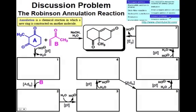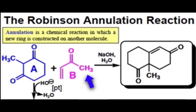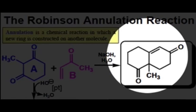I'd like to encourage you to tackle this discussion problem. This is the Robinson annulation reaction. Now that we have gone in-depth through carbonyl chemistry through several lessons, you are well equipped to understand how compound A and compound B react together in the presence of sodium hydroxide in water to form this fused ring system.